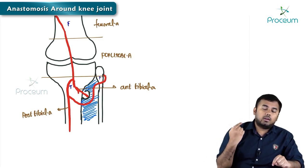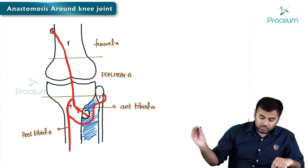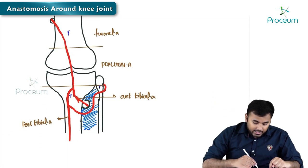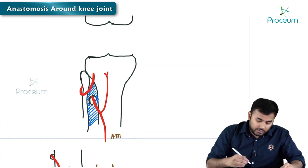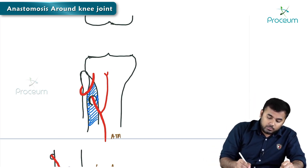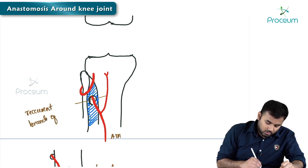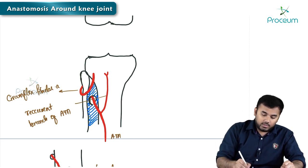If you look from the anterior side, you can find this circumflex fibular artery coming from the back, taking a turn and coming onto the anterior side. Next, the anterior tibial artery, which came to the front, will give one small branch here. This branch given by the anterior tibial artery is called the recurrent branch of the anterior tibial artery.